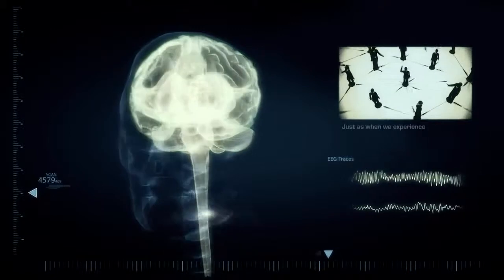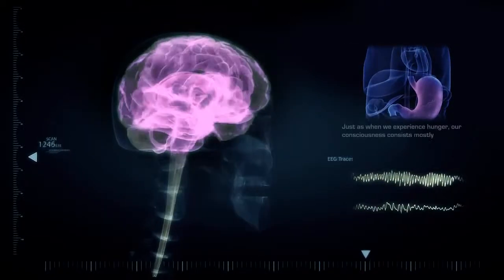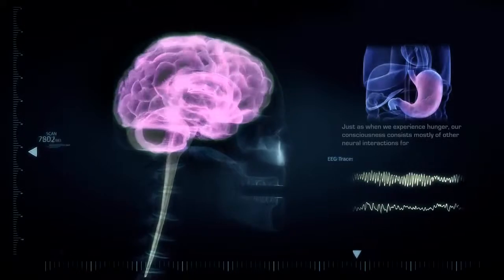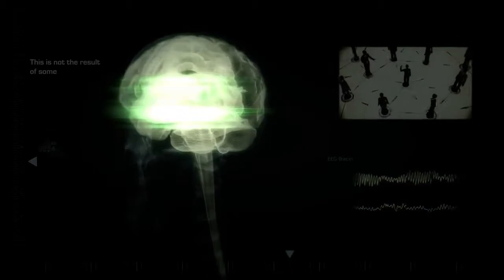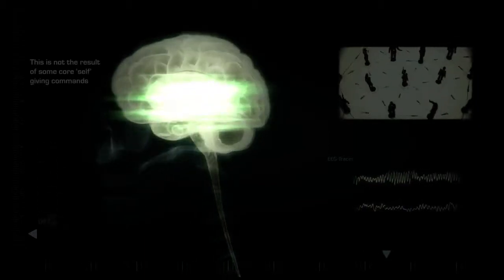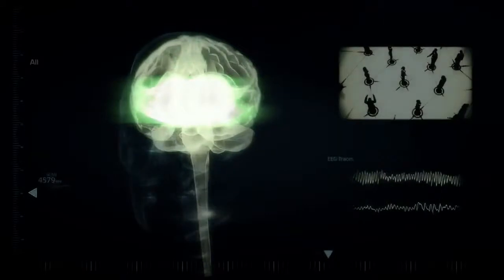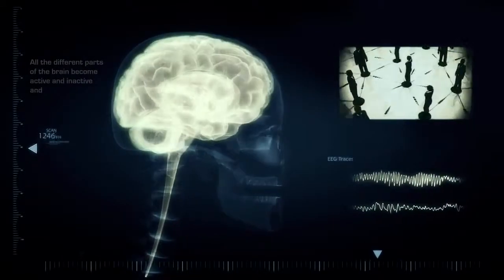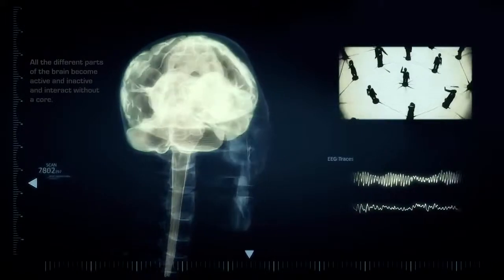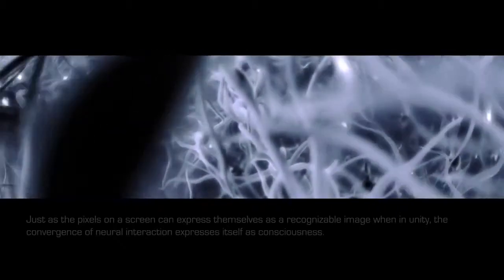Just as when we experience hunger, our consciousness consists mostly of other neural interactions for consuming food. This is not the result of some core self giving commands to different cerebral areas. All the different parts of the brain become active and inactive and interact without a core. Just as the pixels on a screen can express themselves as a recognizable image when in unity, the convergence of neural interaction expresses itself as consciousness.